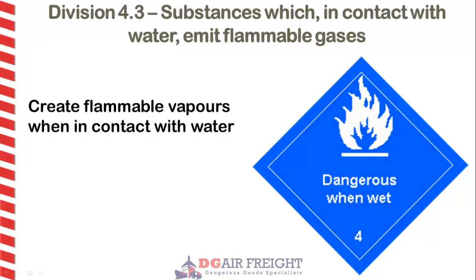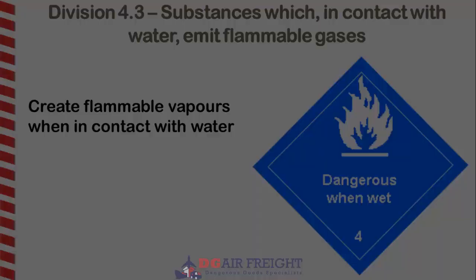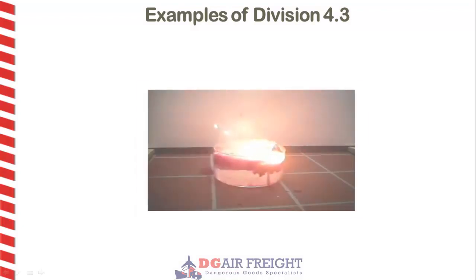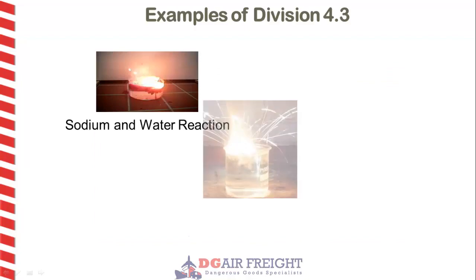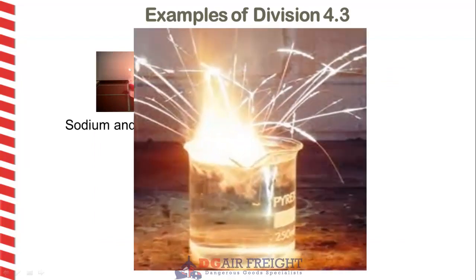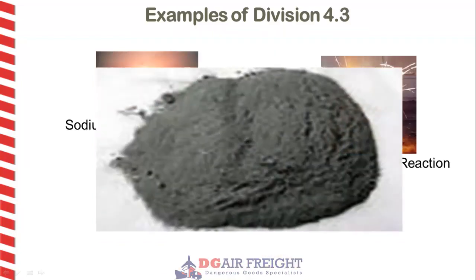Division 4.3 are substances which emit flammable vapours, usually hydrogen, when in contact with water. These vapours could then ignite. Particular care should be taken in the event of a fire when choosing what type of fire extinguisher to use. Examples of Division 4.3 include sodium, lithium, and zinc dust.